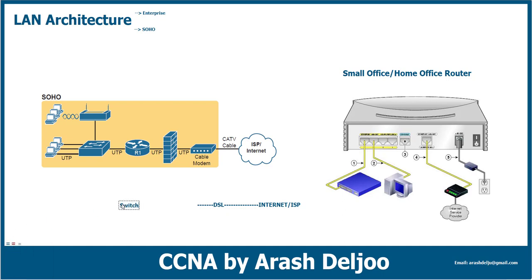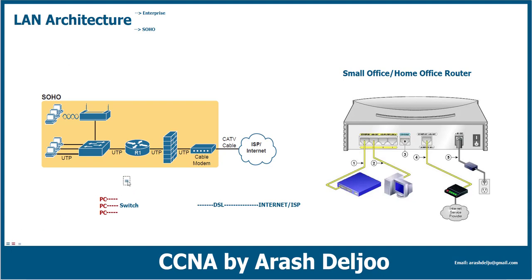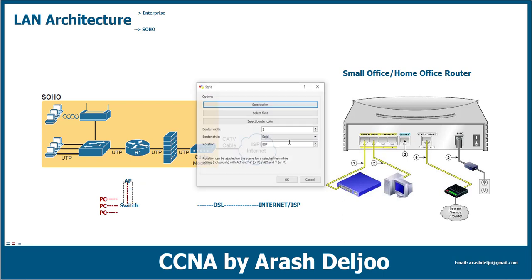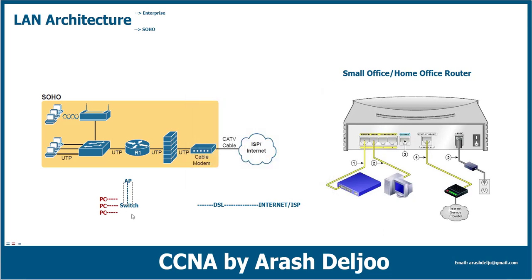Inside the SOHO router, there is at least one switch for PCs using wired network interface cards, and one access point for wireless clients. The access point connects to the switch, and wireless clients connect through the AP to the switch and then to the DSL connection. This establishes connectivity for both wired and wireless clients to the internet and WAN. There are also wireless clients that use the access point to connect to the network.